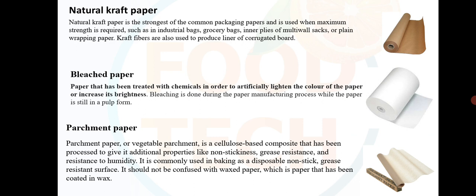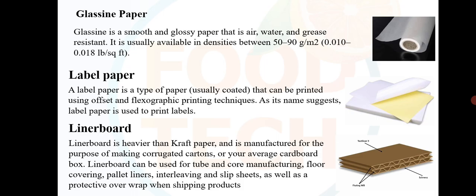Parchment paper, or vegetable parchment, is a cellulose-based composite that has been processed to give it additional properties like non-stickiness, grease resistance and resistance to humidity. It is commonly used in baking as a disposable non-stick, grease-resistant surface. It should not be confused with waxed paper, which is paper coated in wax. Glassine paper is a smooth and glossy paper that is air, water and grease resistant, usually available in densities between 50 to 90 grams per meter square.